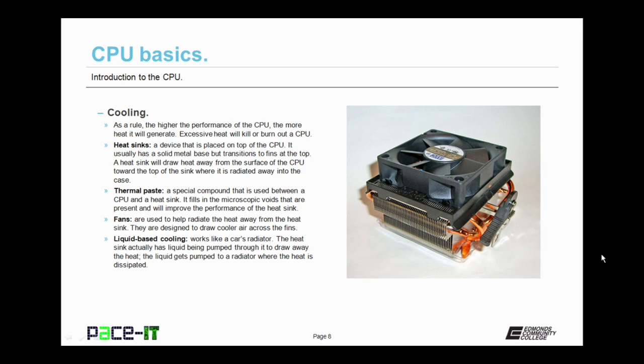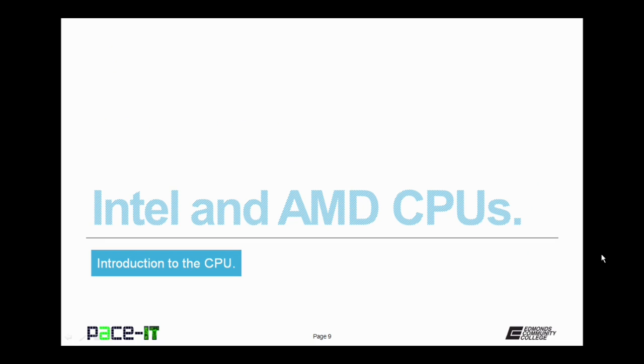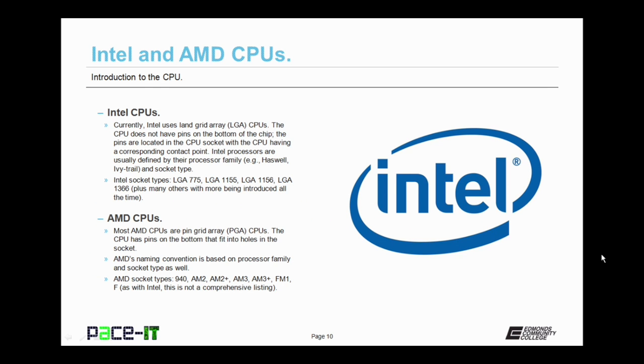Now let's move on to Intel and AMD CPUs. We're going to start with Intel because they're the granddaddy. Intel currently uses LAN grid array CPUs, LGA CPUs. The CPU does not have pins on the bottom of the chip. The pins are actually located in the CPU socket on the motherboard. The CPU just has corresponding contact points on the bottom of the processor.